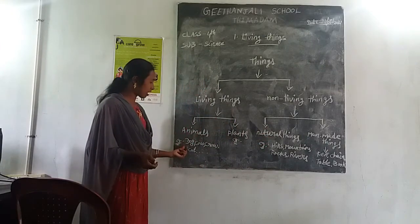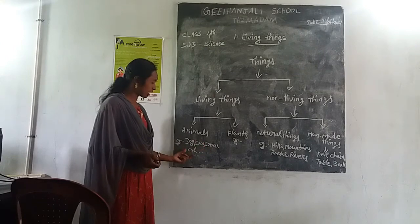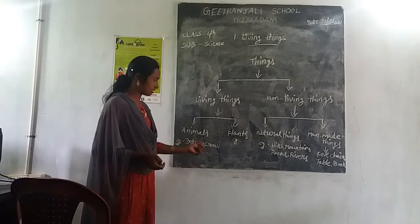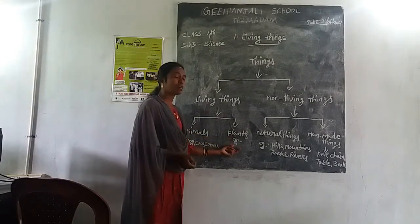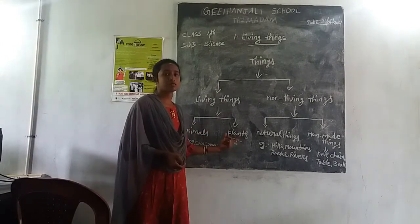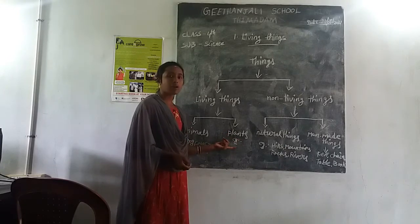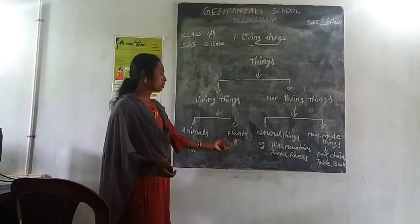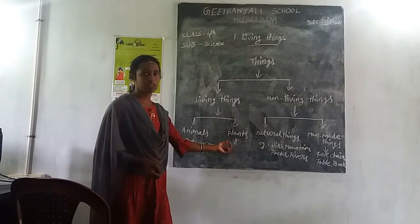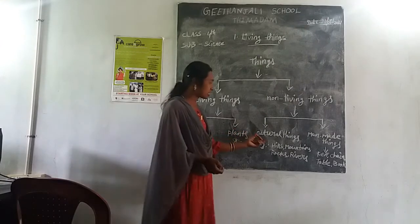Animals like dog, cow, crow, cat, etc. Plants like mango, banyan, neem, etc. These are examples of living things.